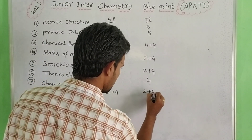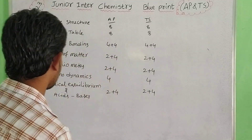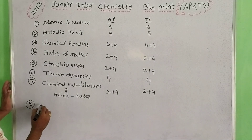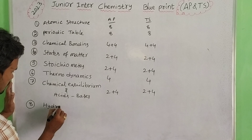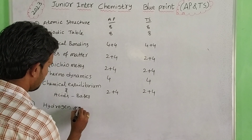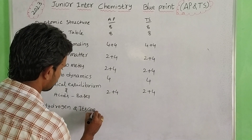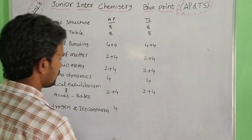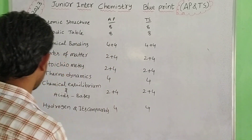Equilibrium has 2 plus 4 marks. Next, the 8th lesson: hydrogen and its compounds. Hydrogen and its compounds — we have 4 marks here.